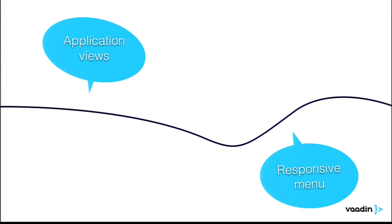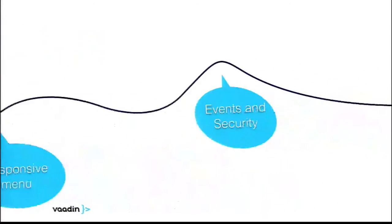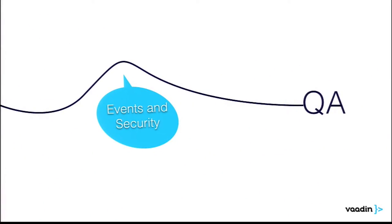We'll also look into something called the responsive Valo menu. Valo is the Vaadin theme engine released with Vaadin 7.3. At the end we'll look at CDI and Spring events — how to fire events from your UI, how to react to them in various Vaadin view compositions — and briefly talk about security in terms of restricting access to certain views for specific user or role groups. At the end we'll have a Q&A session.